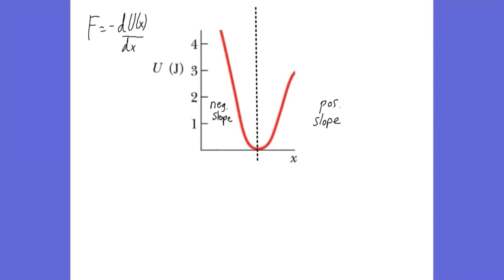Here's a sample graph with potential energy U in joules on the y-axis as a function of position X. The curve is divided into two regions by a dotted line. On the left side of the dotted line, the potential energy curve has a negative slope everywhere. To the right of the dotted line, the curve has a positive slope. Right on the dotted line, the slope of the curve is zero.